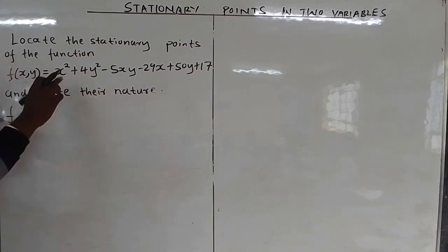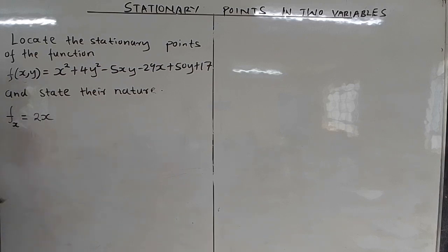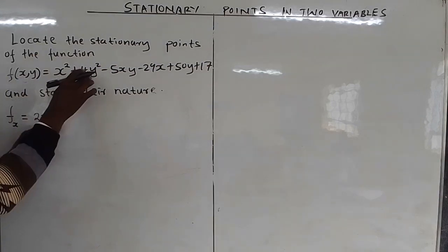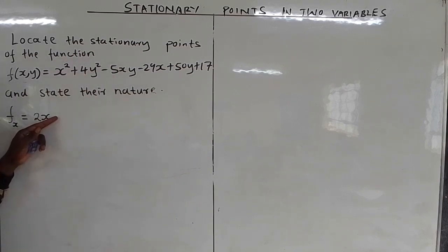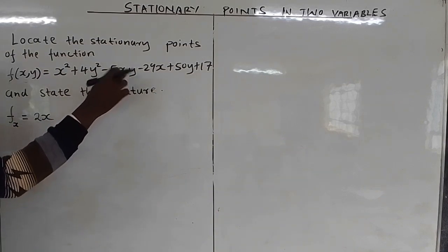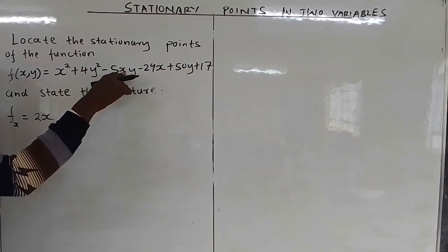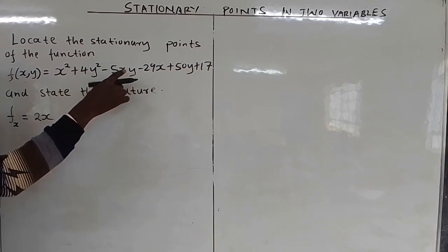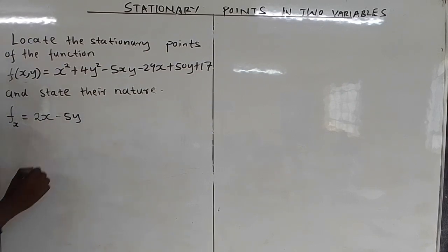If you differentiate x² partially with respect to x, you get 2x. For 4y², there is no x, so it is a constant and becomes 0. Then for -5xy, -5y is a constant; differentiating x gives 1, so you remain with -5y. Are we together?